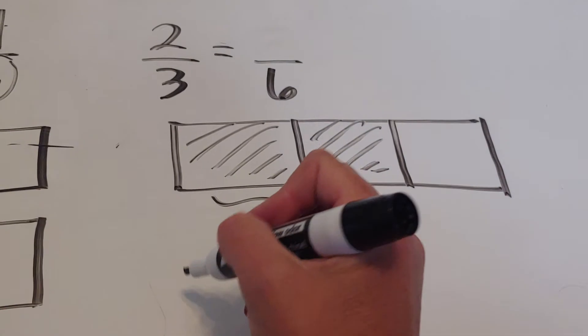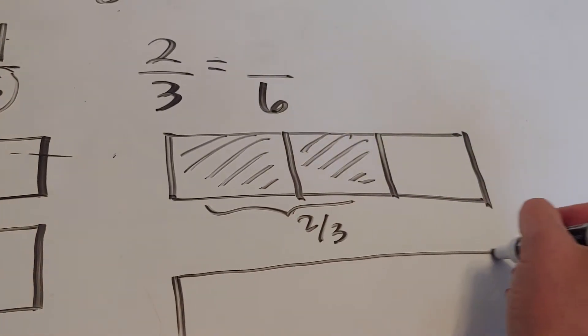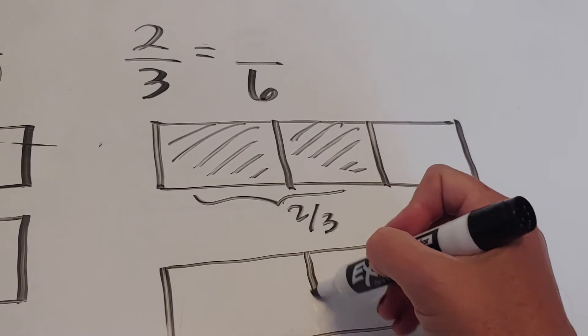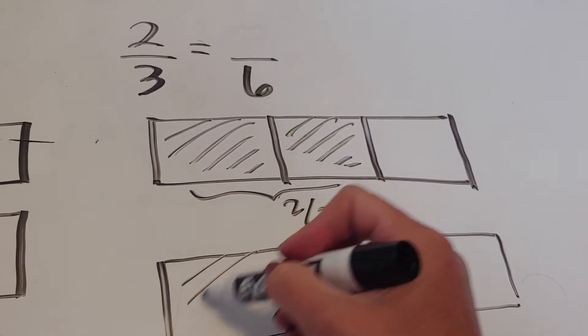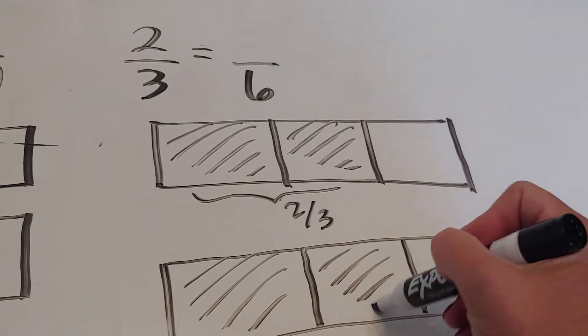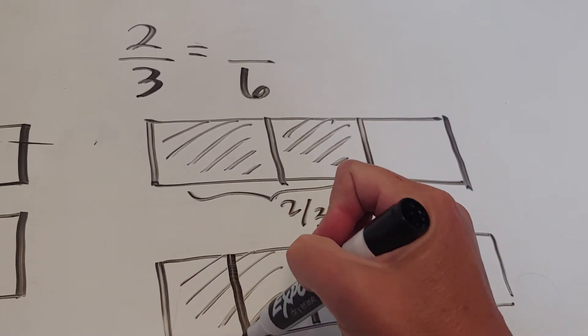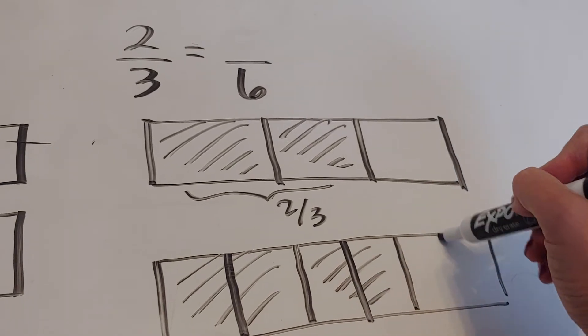Now I want to know what would be the equivalent if we took that same shape but divided it into six. So there's my two thirds. To divide this into six equal chunks I'd have to come along and break that and that and that.